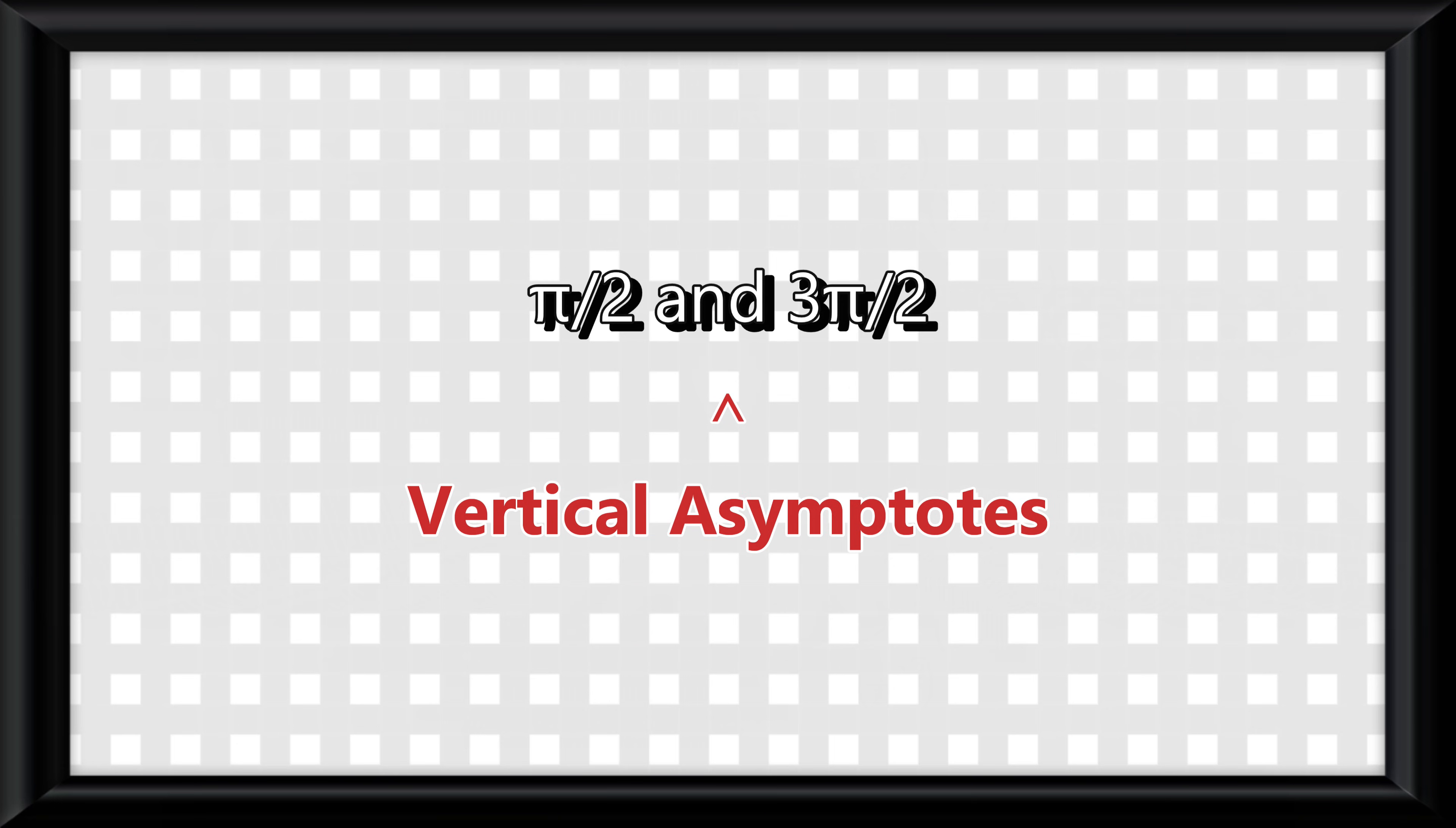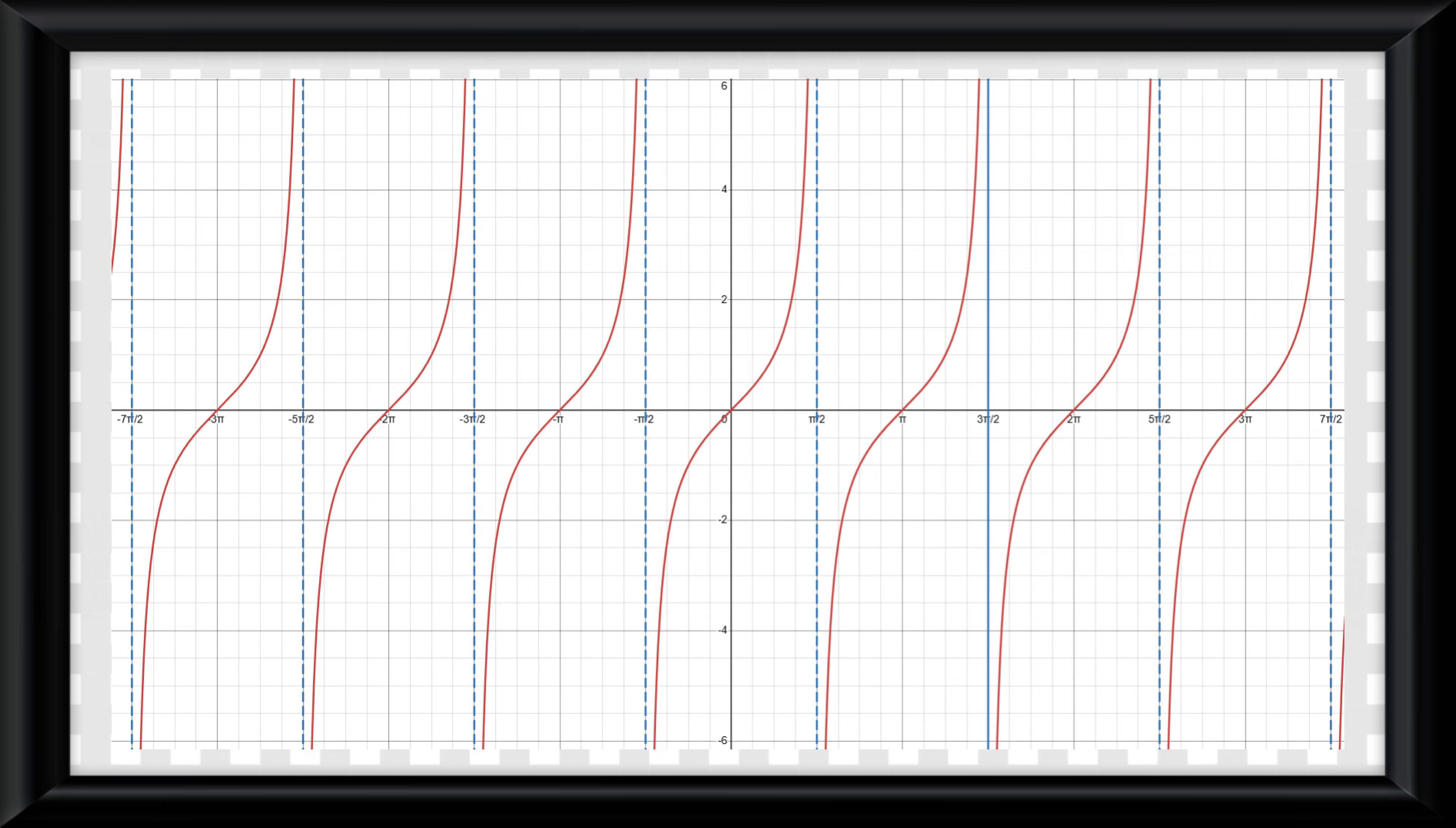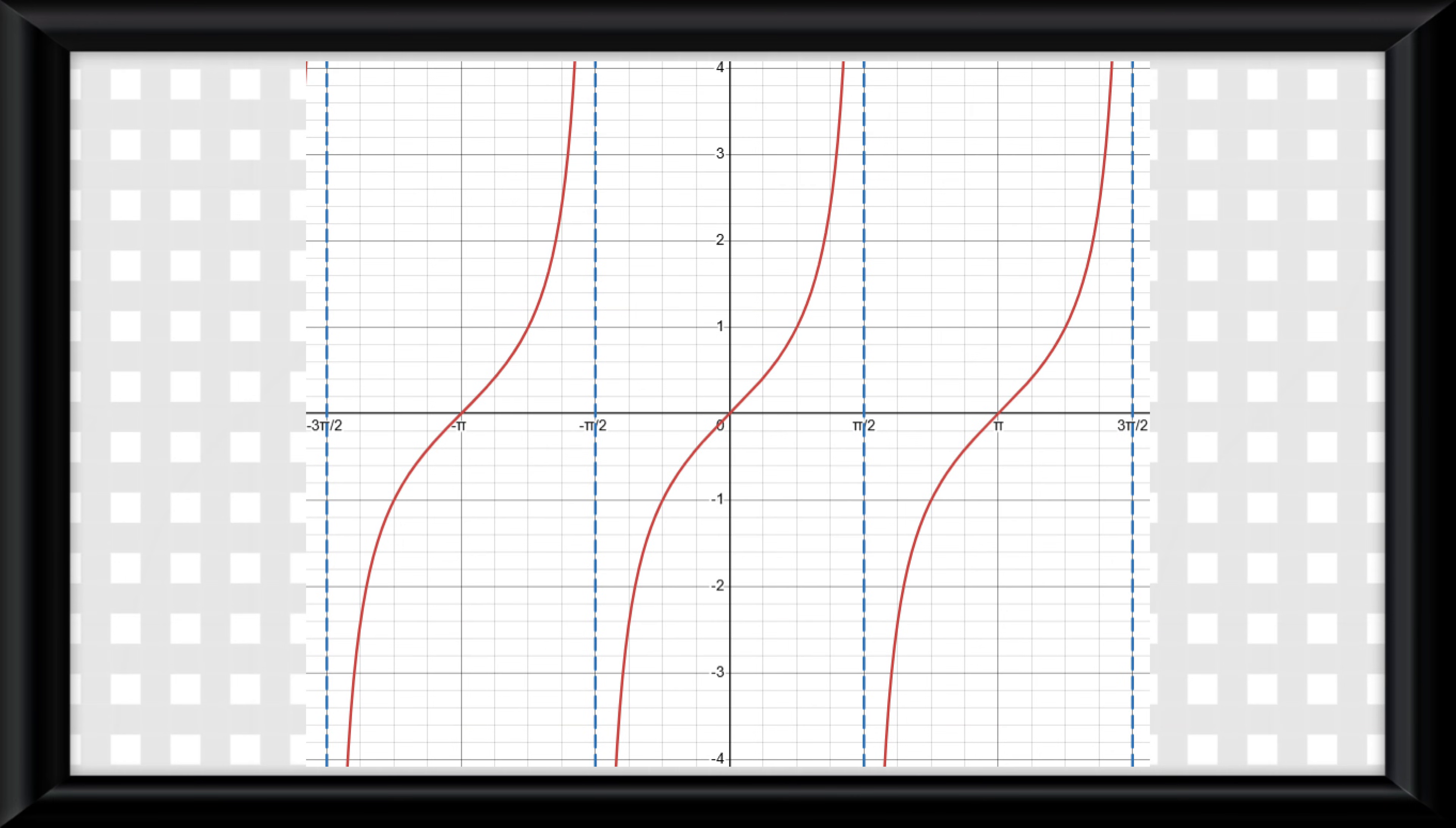which would make vertical asymptotes on the graph. If you were to graph all of the tangent points on the graph, it would look like this. Look at all those vertical asymptotes! You notice that the graph goes to positive and negative infinity and looks real fun!